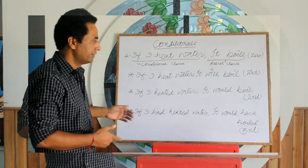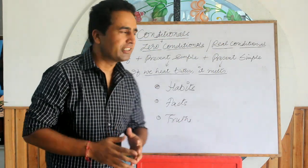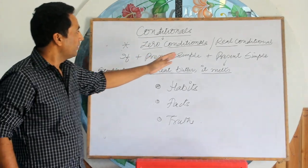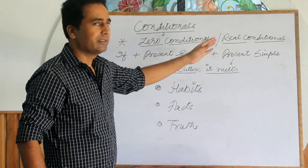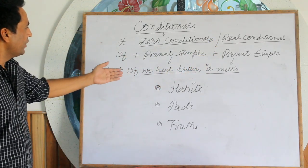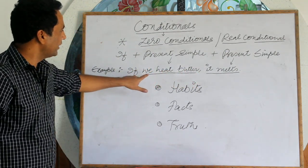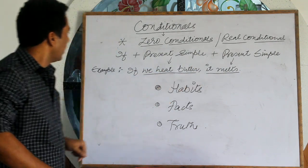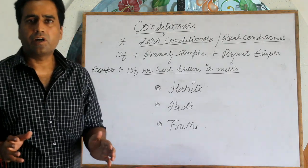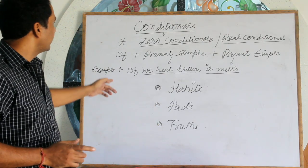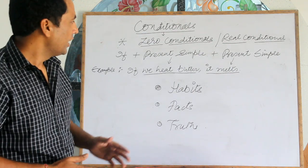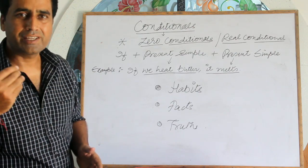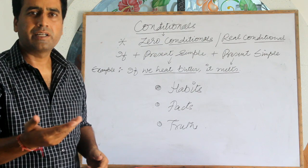So let's get into this lesson. We have the zero conditional. What is the structure? We use present simple in the first part — the conditional clause — and present simple in the second part — the result clause. For example: if we heat water, it boils. We use the zero conditional to talk about habits, facts, and truths. We cannot argue about them. More examples: if we leave food outside the fridge, it spoils. If the sun rises in the east, it sets in the west.